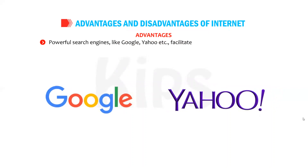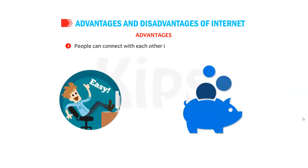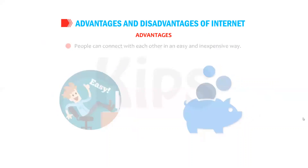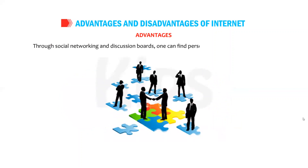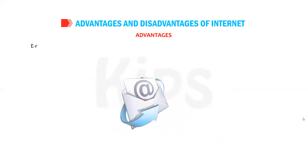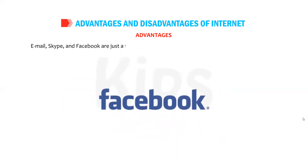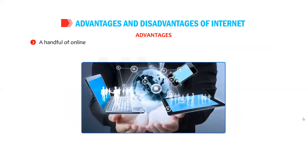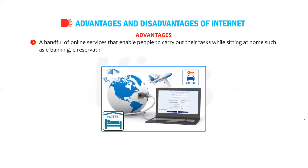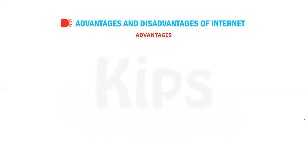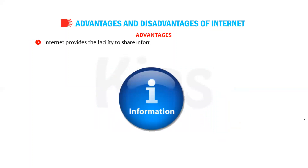Now let us understand the advantages and disadvantages of the internet. Advantages: powerful search engines like Google and Yahoo facilitate finding information on almost every subject. People can connect with each other in an easy and inexpensive way through social networking and discussion boards. Email, Skype, and Facebook are just a few examples of service providers that bring the world closer. Online services enable people to carry out tasks while sitting at home, such as e-banking, e-reservation, and e-shopping. The internet also provides a facility to share information with many users simultaneously.